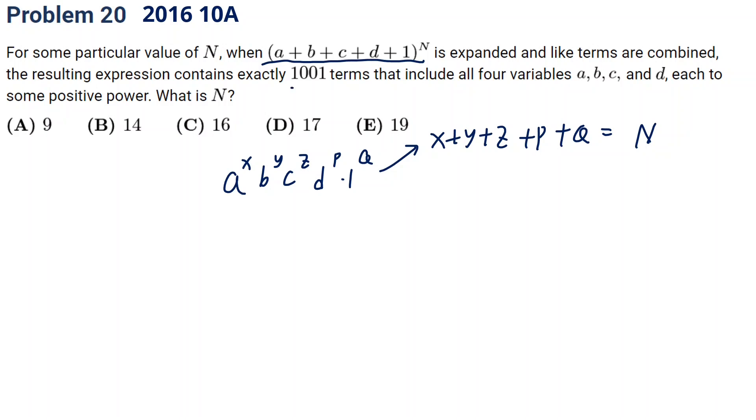We know there are 101 terms that include all four variables A, B, C, D, which means X, Y, Z, P should be at least one. If we subtract those four, we have N minus four numbers left, which we distribute to X, Y, Z, P, Q.